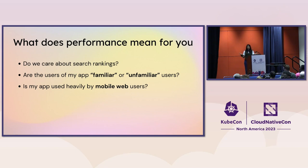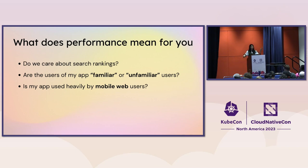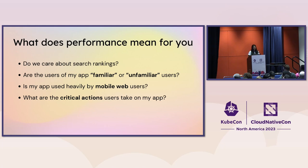Is your app heavily used by mobile web users? This is super important context because performance on desktops and performance on mobile web browsers are two completely different experiences. Mobile phones still don't have the browser processing speeds that desktops do, so it's important to separate out your data from desktop to mobile browsers. And what are the critical actions users take in your app — are those things performant? It's more important to figure out whether users can carry out that critical thing than to have absolute page load times across your site. Ask yourself these questions to figure out what performance means to you.